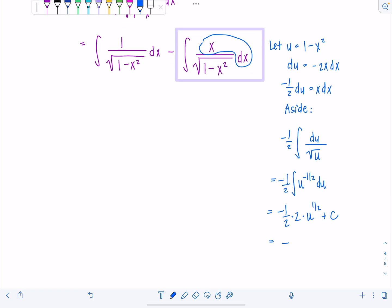So this is just negative. Instead of u to the one half, I'm going to write radical. What was u? It was one minus x squared plus c. We should call this little guy c one.